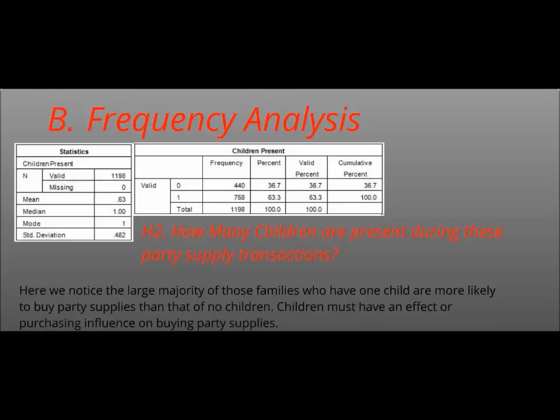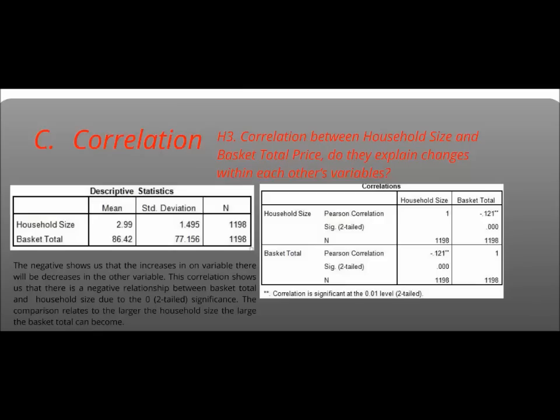For correlation, this is going to be based on hypothesis three, which is between the variables household size and basket total. Just kind of asking yourself: is there a relevance between one variable and another? In this specific case, you can see that the significance two-tails for household size and basket total shows zero, which is less than .05, which is great. Being that there is a significance between household size and basket total, it further says that if household size changes, there is a possibility the basket total will also change. The larger the household size, the larger the basket total can become. This also shows a negative relationship between basket total and household size due to the zero significance.